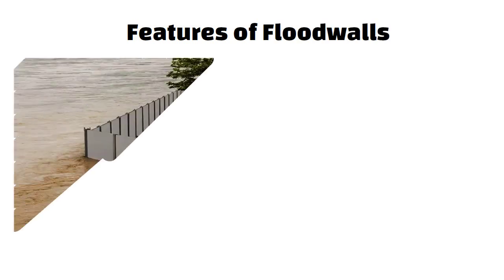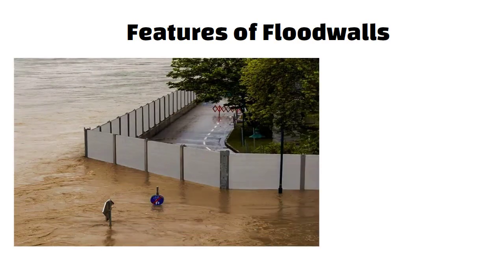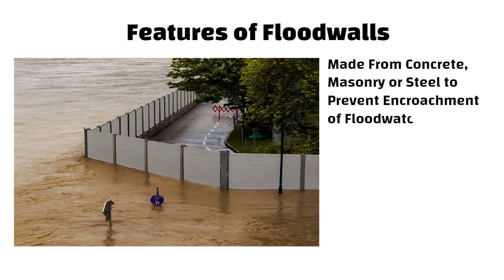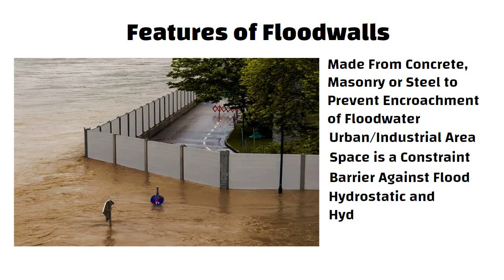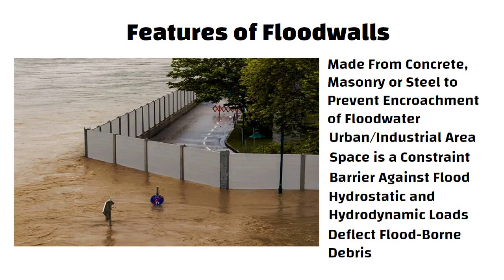Now let us discuss features of flood walls. Flood walls are engineered structures made from concrete, masonry, or steel to prevent encroachment of flood water. They are constructed mostly in urban or industrial areas where space is a constraint. The main functions of flood walls are to provide a barrier against flood, protect the enclosing area and structure from hydrostatic and hydrodynamic loads, and deflect flood-bound debris away from the building.